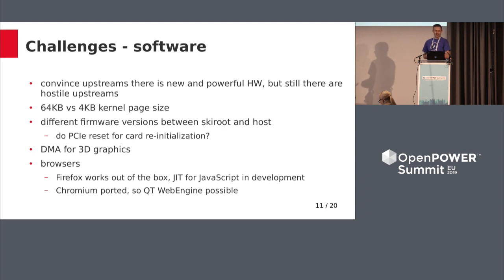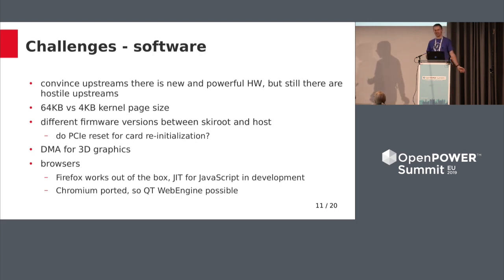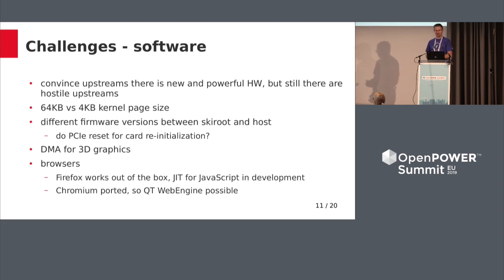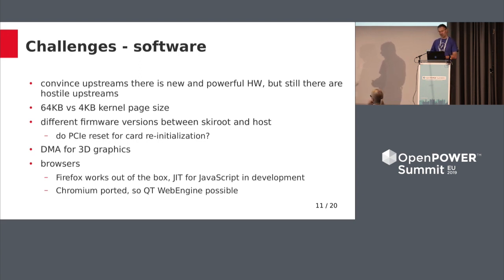More on the software part: one issue we met was convincing upstreams that there is new hardware for Power platforms. They lived in a world where Apple G5s were the last hardware. Once we said you can get a small part of the number one and two supercomputers on your desk and run any distribution, they said okay, no problem, we'll accept your improvements. But there are still some projects that don't readily take contributions from the open source ecosystem — some are just hostile or don't like outside contributions. Still need to deal with that, but hopefully the situation will improve.